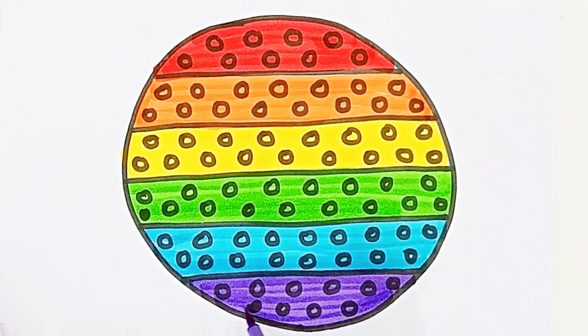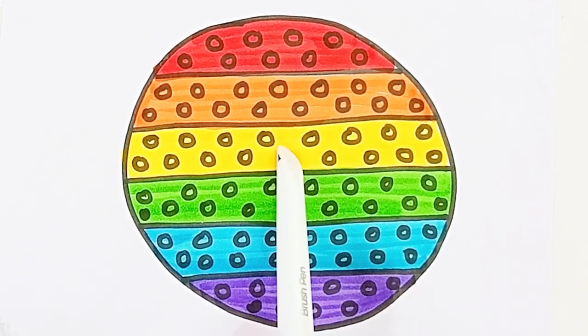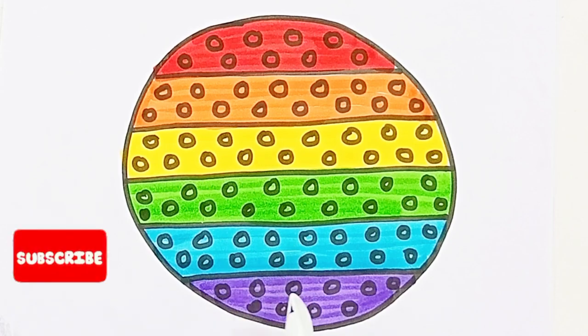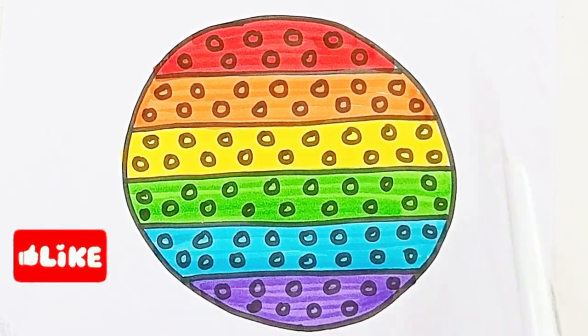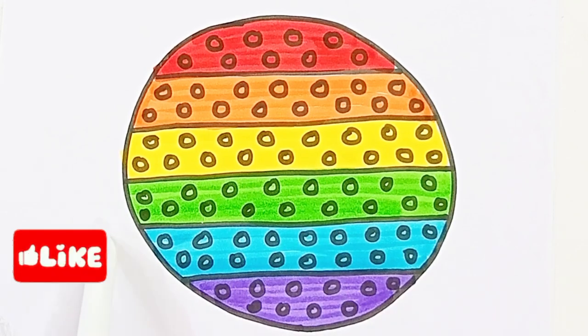I am coloring with rainbow colors. These all are rainbow colors: red color, orange color, yellow color, green color, sky blue color, purple color. These are all rainbow colors. This shape is circle shape. This is circle pop it.